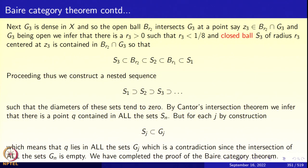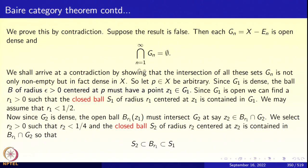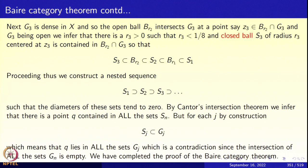What have we proved? We took a point P in the metric space, took a ball around that point, and found a Q which sits in that ball and in the intersection of all the G_j's. So we have proved that the intersection of all the G_j's is dense: any arbitrary neighborhood of an arbitrary point will intersect this set. So the set is dense, and that is a contradiction. So we have proved the Baire Category Theorem.